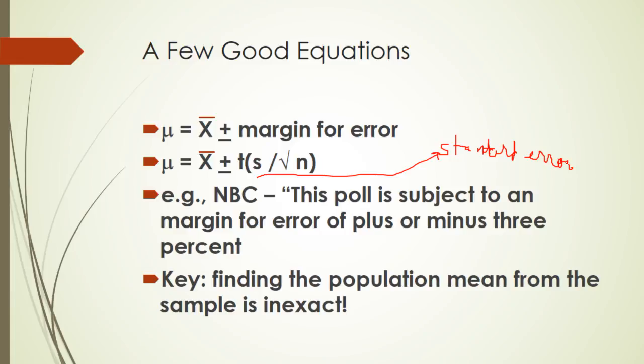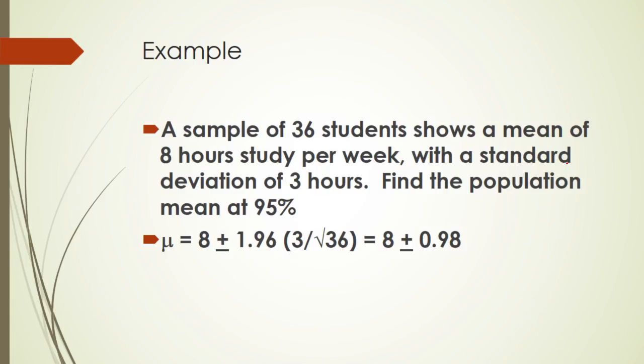So s is the standard deviation of the sample. And square root of n, n is the sample size. So when we hear, you know, NBC, this poll is subject to a margin for error, plus or minus 3%. How do they know that? Well, they use that formula, or variation, actually, on that formula that we'll talk about in a minute. But basically, they use that formula to calculate that. And remember that what we're doing is trying to find the population mean from the sample. And that is an inexact thing. And that margin for error is showing us how inexact it is.